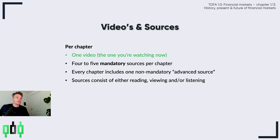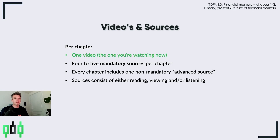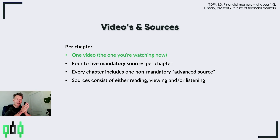Every chapter includes a non-mandatory advanced source, but for this very first chapter I want you to really watch it, because it's about the workings of money — how money is created. If you understand how money works, you can conclude that we need to put our capital to work. With high inflation, you're able to buy less and less products for the same dollar or euro, so we need to outpace inflation to at least maintain a neutral balance.